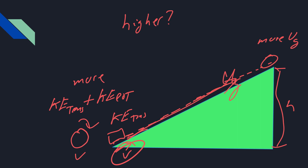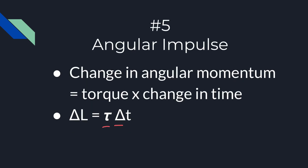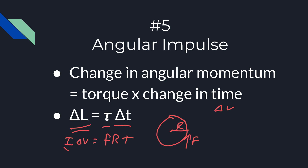Question number five is one of their favorite calculations: angular impulse. For example, you have a wheel and you push with a certain force at a certain radius, and they want to know the change in velocity. You use torque times time: force times radius times time equals inertia times the change in velocity. They'll most likely give you the inertia, force, radius, and time, and you just find the change in velocity. It's pretty straightforward — just be on the lookout for it because they love this question. That's my five most common questions for rotational motion. Good luck!